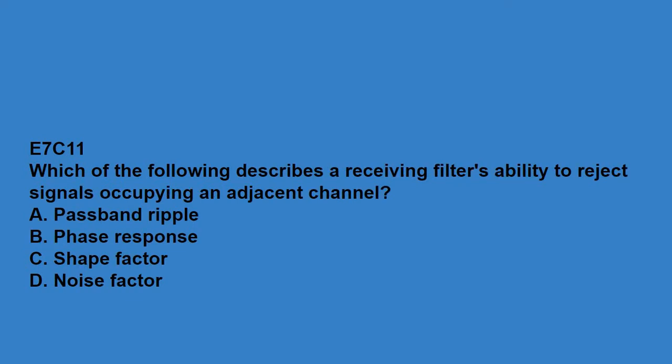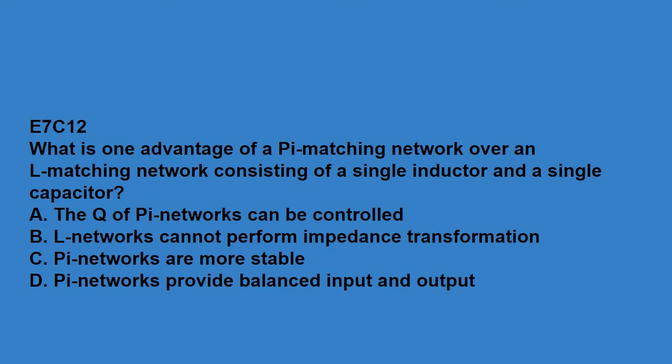E7C10, which of the following filters would be the best choice to use in a 2 meter band repeater duplexer? A cavity filter. E7C11, which of the following describes a receiving filter's ability to reject signals occupying an adjacent channel? That is a shape factor. E7C12, what is one advantage of a pi matching network over an L matching network consisting of a single inductor and a single capacitor? The Q of pi networks can be controlled.